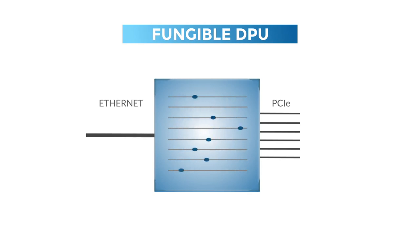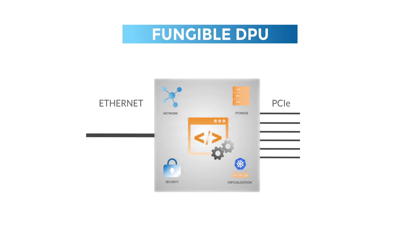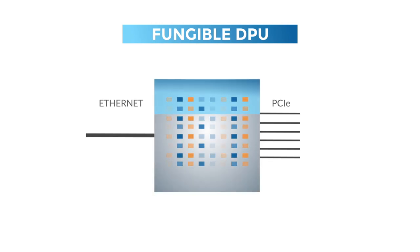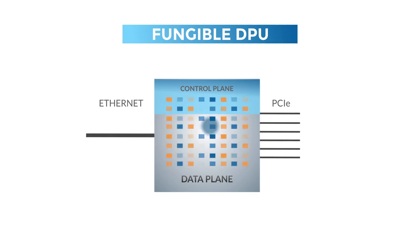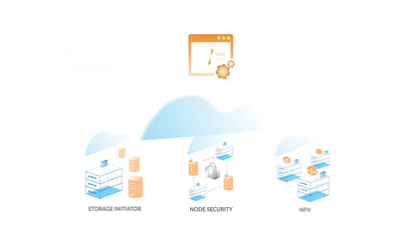Data-centric computations include network, storage, security, and virtualization functions that run on the data path. This data path engine is fully programmable. The Fungible DPU data path engine comprises hundreds of hardware threads that can execute these data-centric computations.